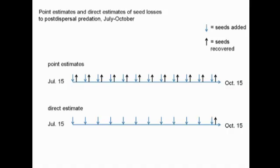To accomplish this, we made two types of seed predation measurements in parallel. Point estimates consisted of weekly measurements of seed predation, each made over a 48-hour interval. Seeds were added to the soil surface at the beginning of the interval, removed at the end of the interval, and remaining viable seeds were counted.